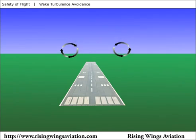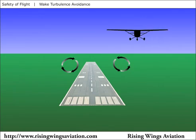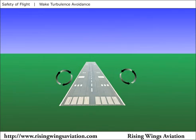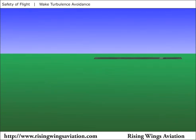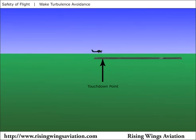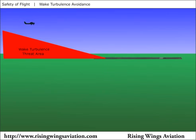Since wake turbulence sinks and dissipates, wake turbulence avoidance usually comes down to staying above the flight path of the generating airplane. If you were landing behind a larger airplane, staying above that airplane's flight path all the way to the landing would mean landing at or beyond its touchdown point. A common mistake is to stay above the other airplane's path until the last few hundred feet and forget about the wake turbulence to concentrate on the landing. However, the other airplane produces wake turbulence all the way to touchdown. Make sure to land beyond its touchdown point or go around if you're not comfortable with the situation.